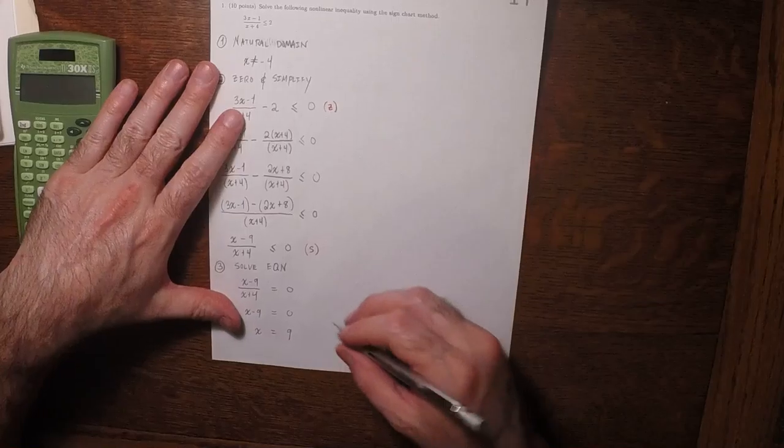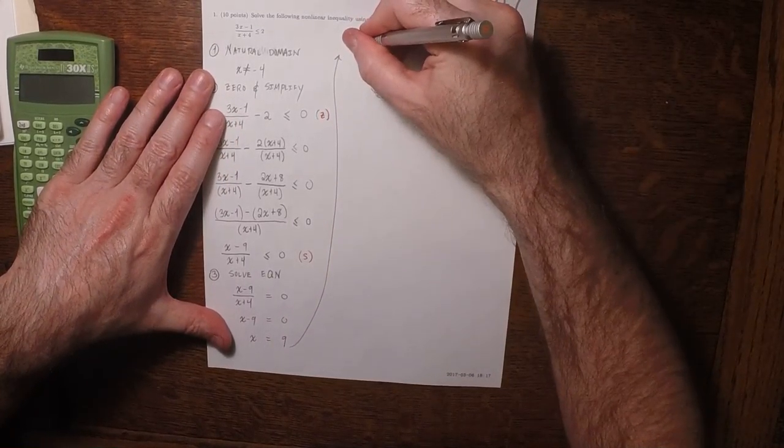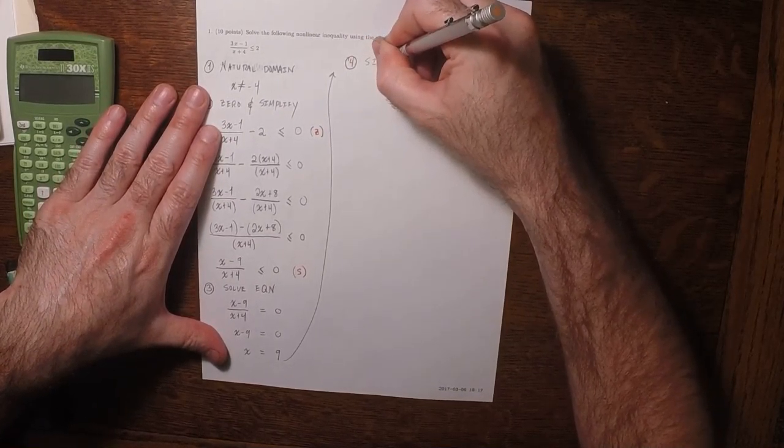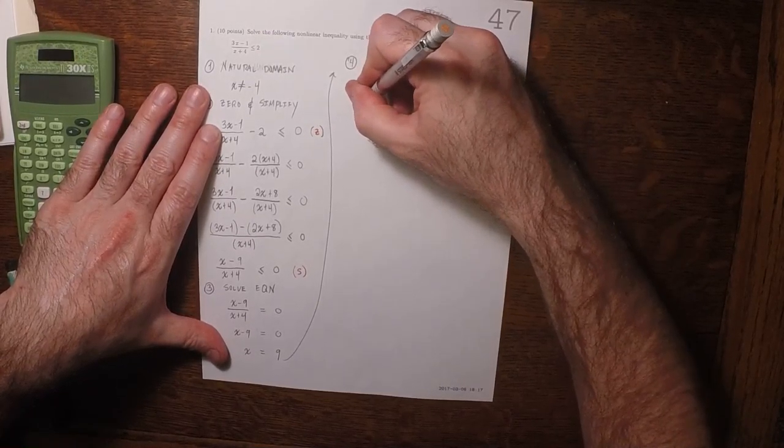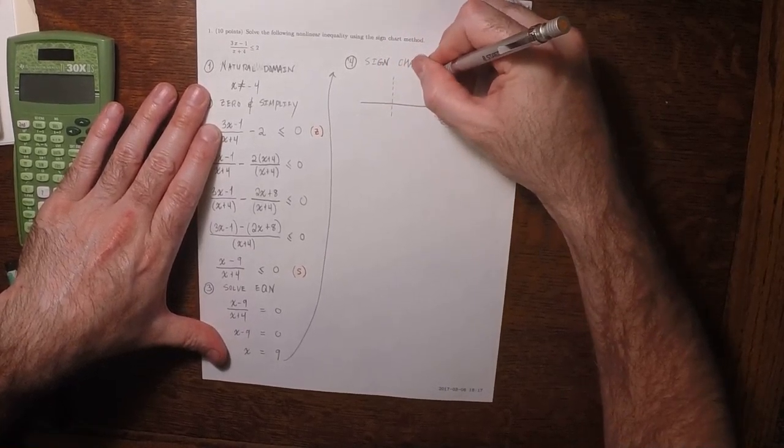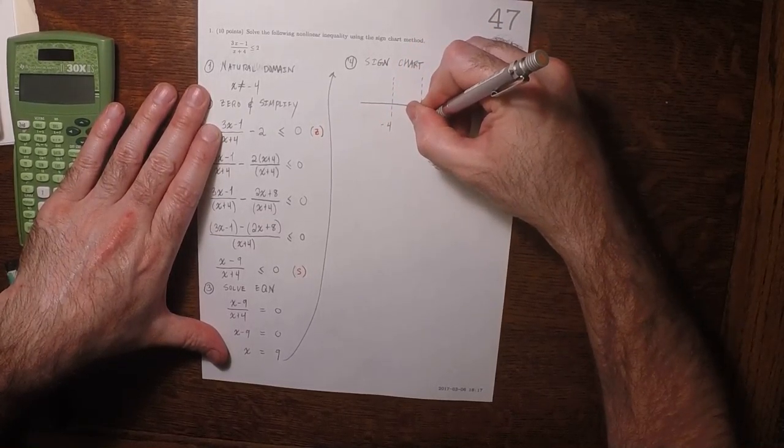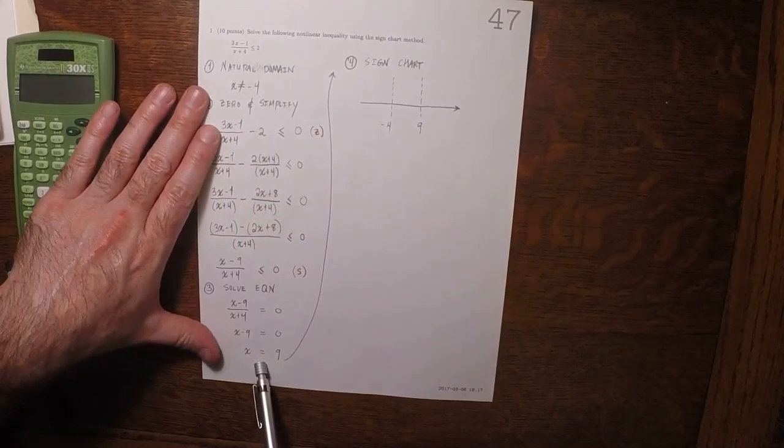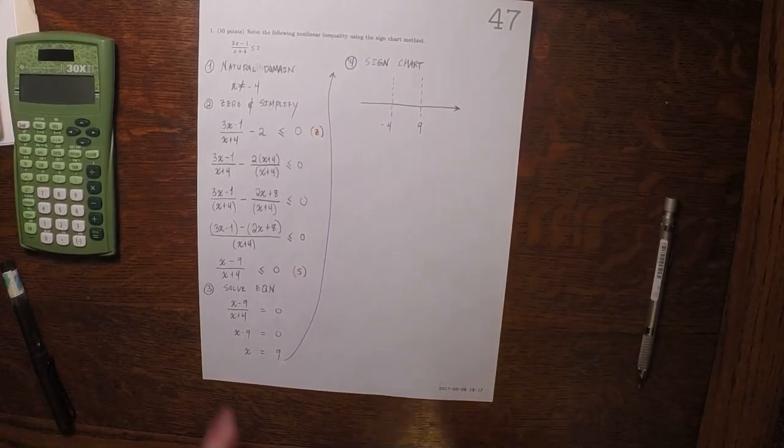The next step, the sign chart method is named after this step. This is where we actually make the sign chart. We'll plot negative 4 and 9. Negative 4 comes from the break in the natural domain. 9 comes from the solution to the equation.